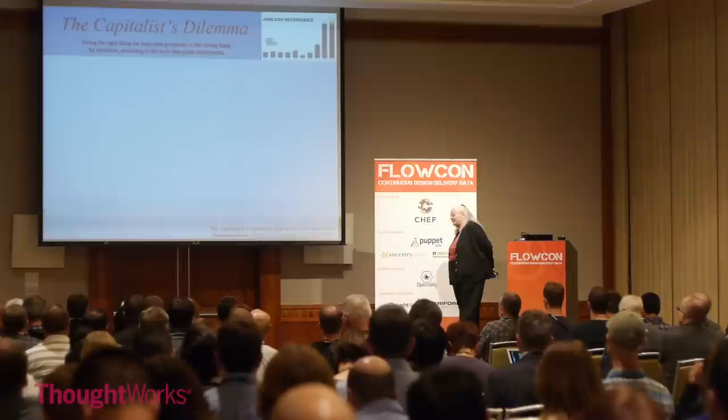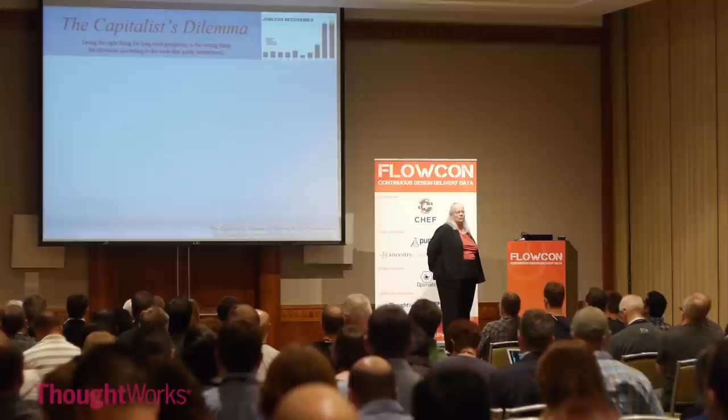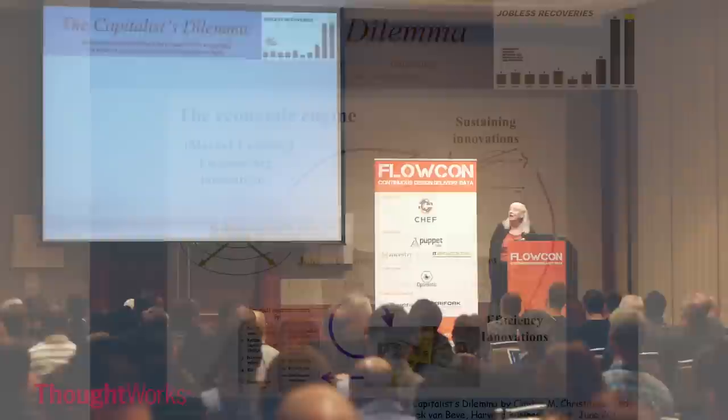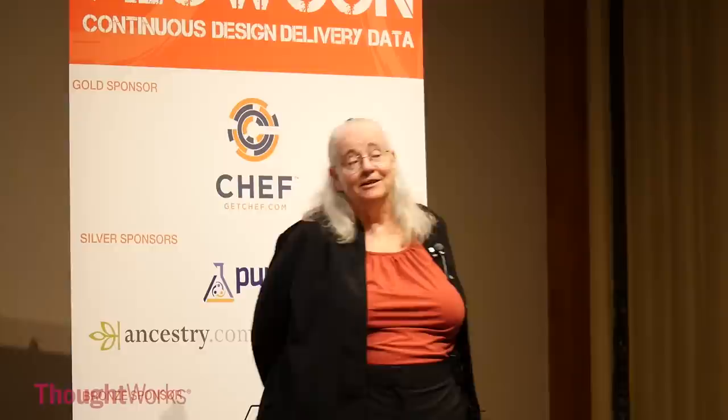He said he was triggered by the whole jobless recovery. Why do we have a jobless recovery? This little chart up here shows how many months it took to get back to the job level we were at after each recession starting in the 1970s. All of a sudden, our recessions are not recovering with the same number of jobs. He came to the conclusion that it was the business schools he's responsible for teaching in, and the students he's responsible for delivering to the market, that are causing this problem.